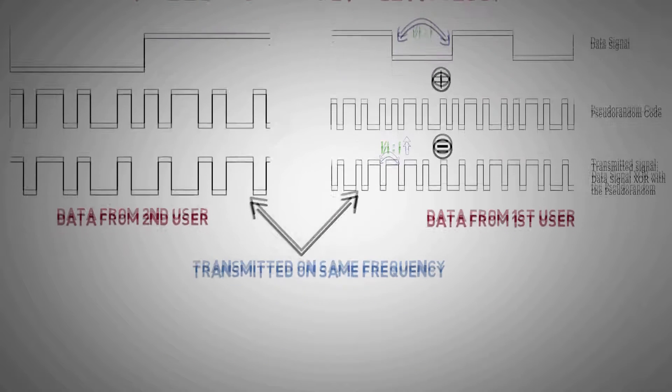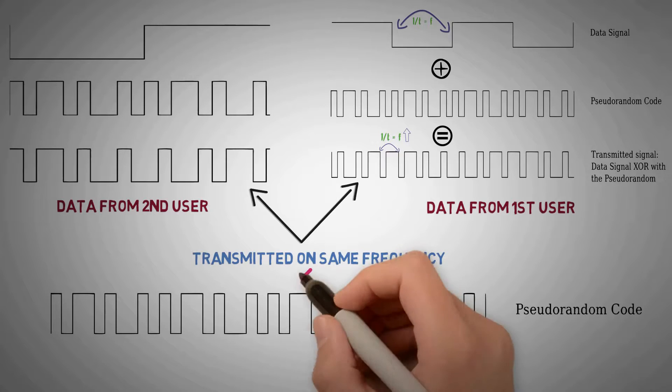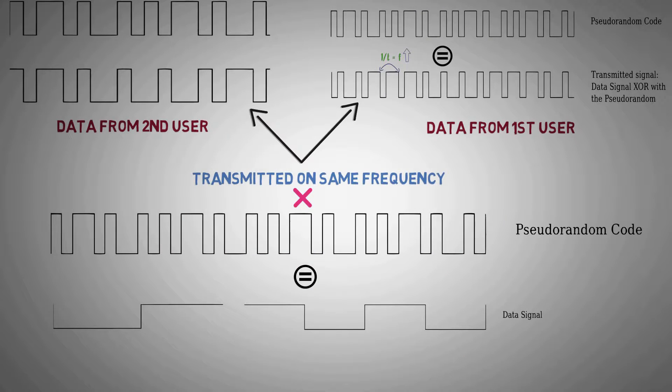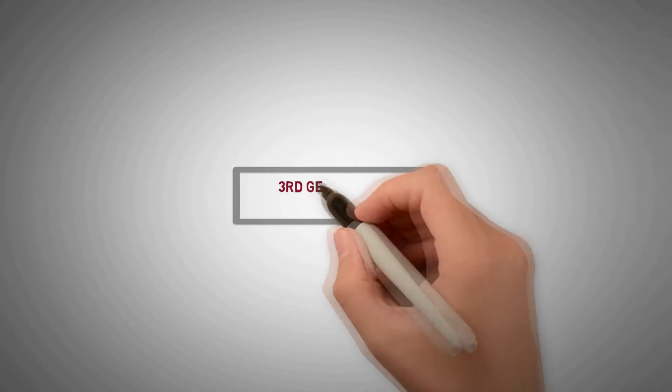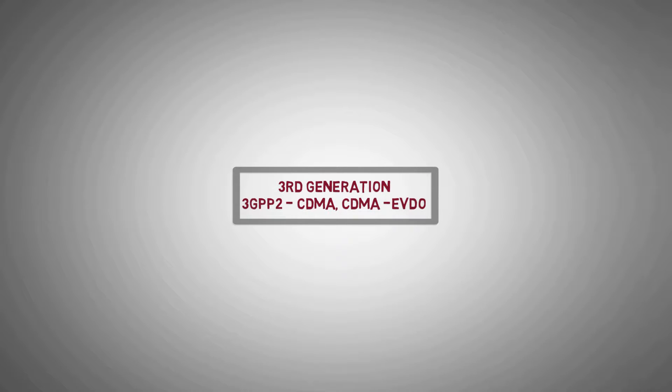In order to retrieve the signal, receiver must have the same spreading sequence, which is multiplied to this composite signal in a process called de-spreading. This makes CDMA very secure and robust. It was used in 3GPP2 standards such as CDMA and CDMA evolution data optimized standards.